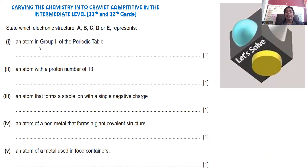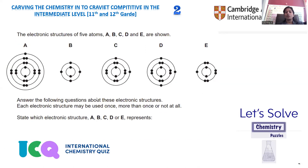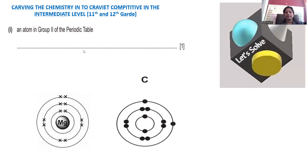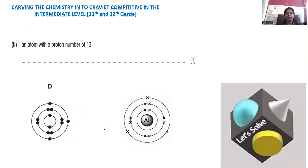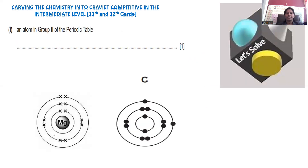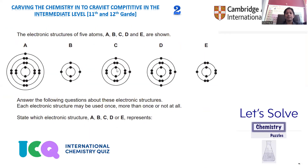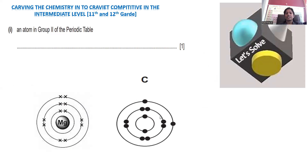Question one: an atom in group two of the periodic table. Among all these, the main group two element will have an outer shell configuration of ns2. For that purpose, the second main group element will be magnesium. That is given in option C: 1s2, 2s2, 2p6, 3s2 — that is the right electronic configuration for magnesium.